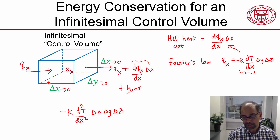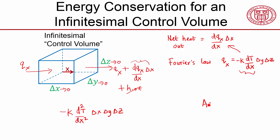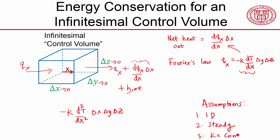I'm going to assume 1-dimensional, meaning there is no heat flow through the y or z faces. I also assume there is no variation of temperature with time — that is, it is steady state. And I assume k is a constant, meaning constant thermal conductivity. We can relax all these assumptions, but it just makes the details more complicated.